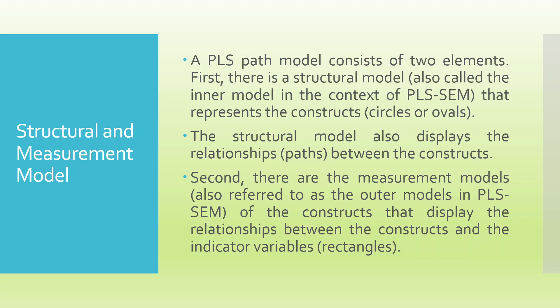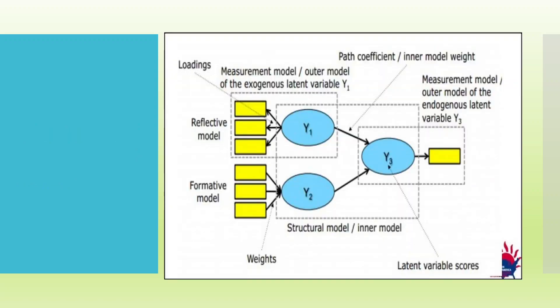Now, a PLS path model consists of two paths. One is a structural model and another is a measurement model. Let us try to see the difference between these two. When you connect the measured variable—which are in yellow—with the blue oval, the team players with the football team, the small one, then we are talking about the measurement model, this part. But when we are connecting construct to construct, that is from oval to oval, blue to blue, then we are talking about the structural model, inner.